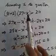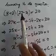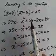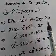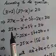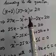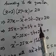Expanding: x multiplied by 27 gives 27x, x multiplied by minus x gives minus x squared, 2 multiplied by 27 gives 54, and 2 multiplied by minus x gives minus 2x. So we get: 27x minus 2x is 25x, minus x squared plus 54 equals 210.